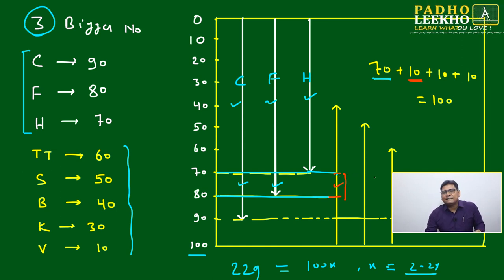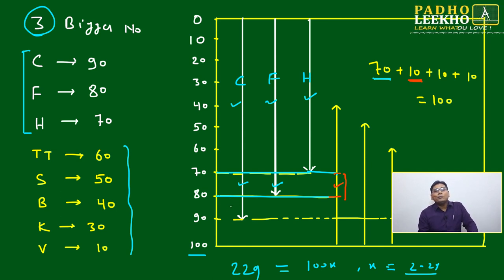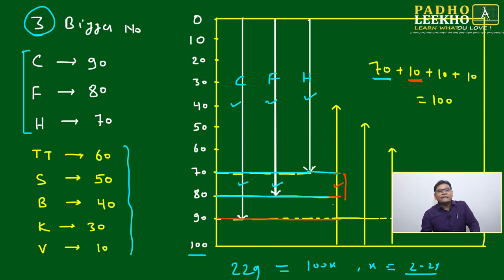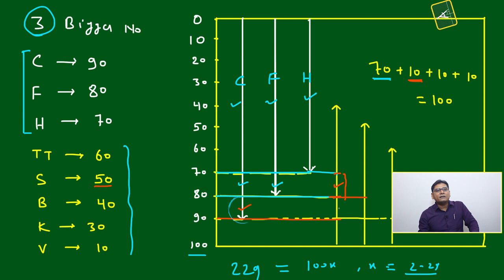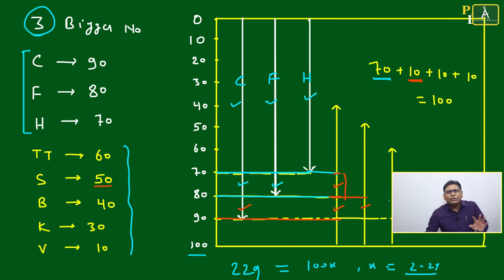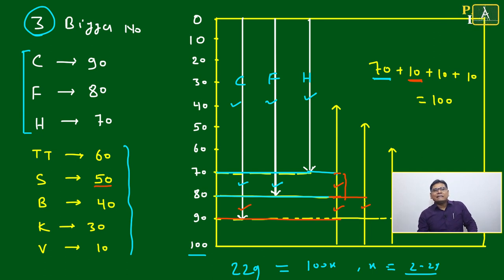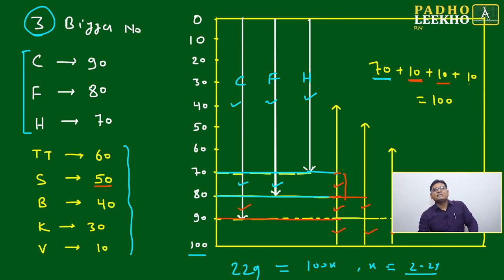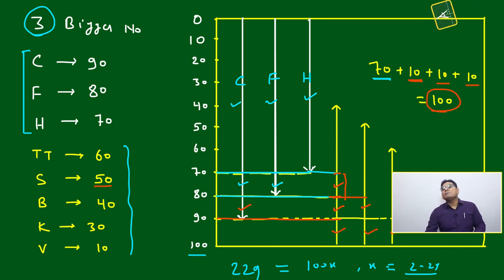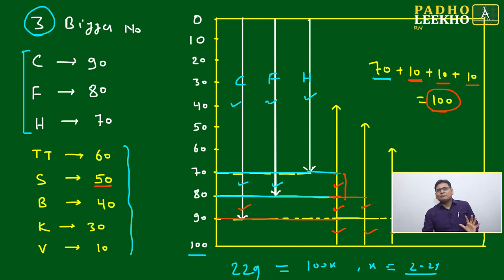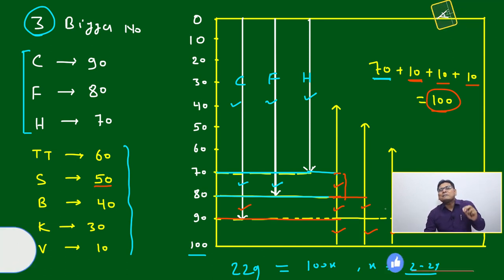Continuing, the zone from 80 to 90 originally had only one line. After adding Table Tennis (60) and Soccer (50) from the bottom, that zone now also gets three lines, making it another 'three-game' region with 10 units. The zone from 90 to 100 similarly contributes 10 units. In total, we accumulate: 70 + 10 + 10 + 10 = 100. So the maximum number of students playing exactly three games is 100.